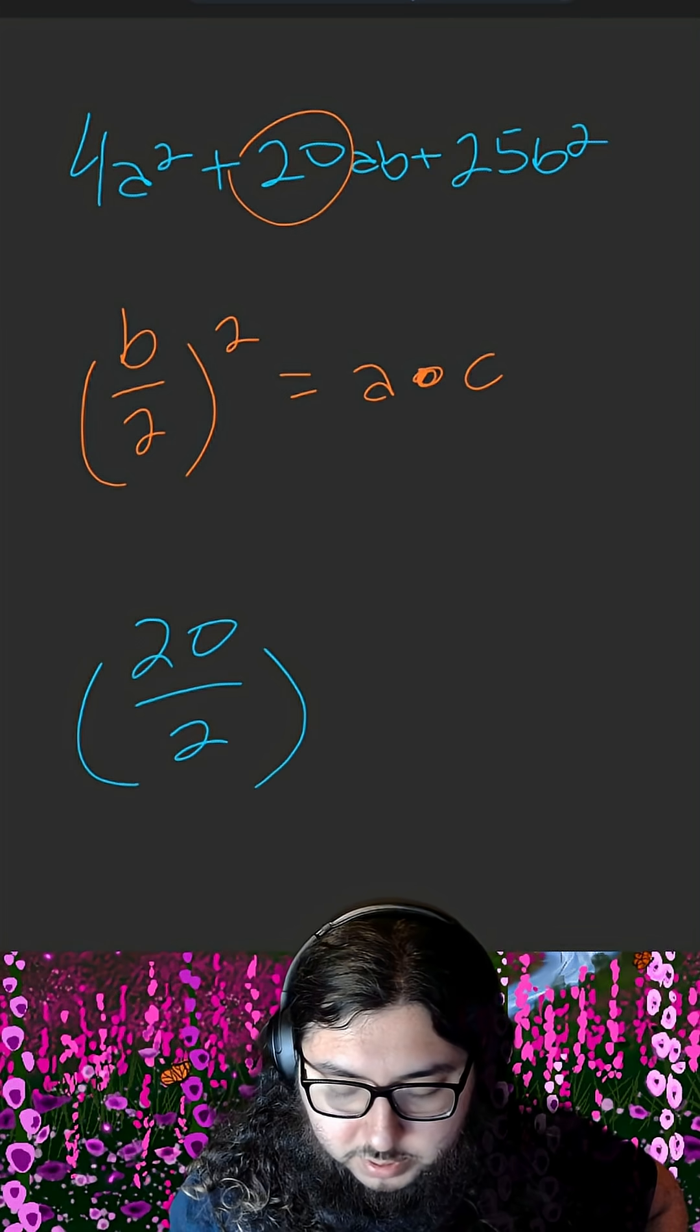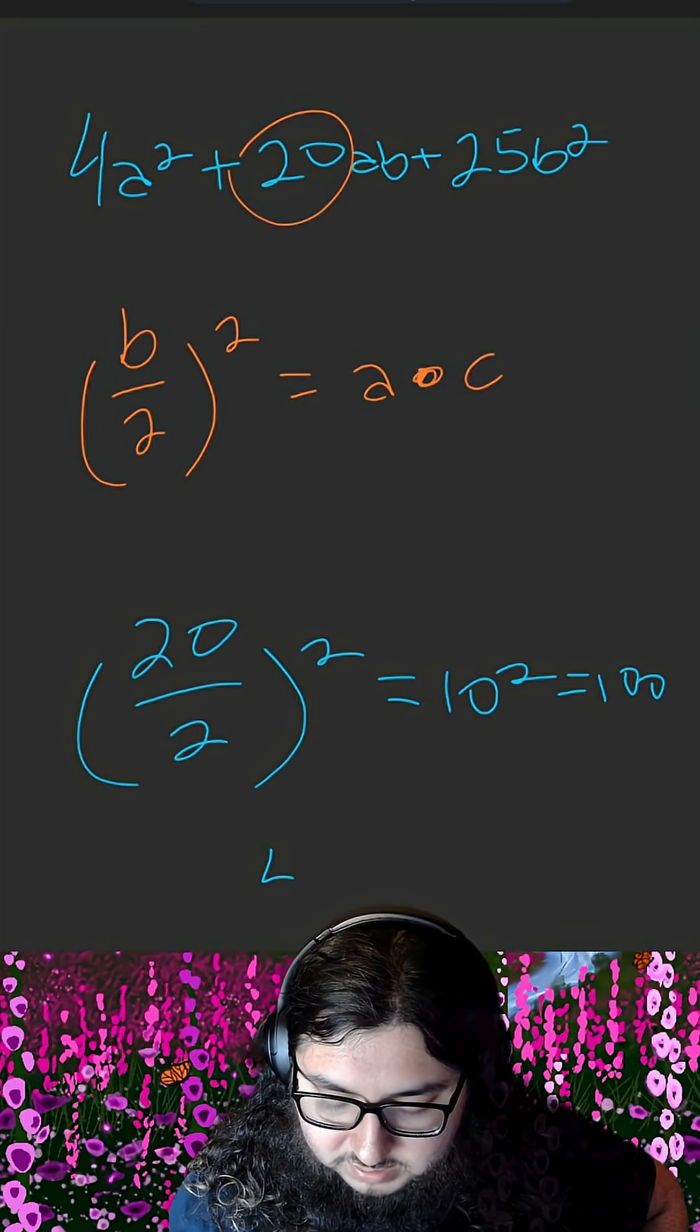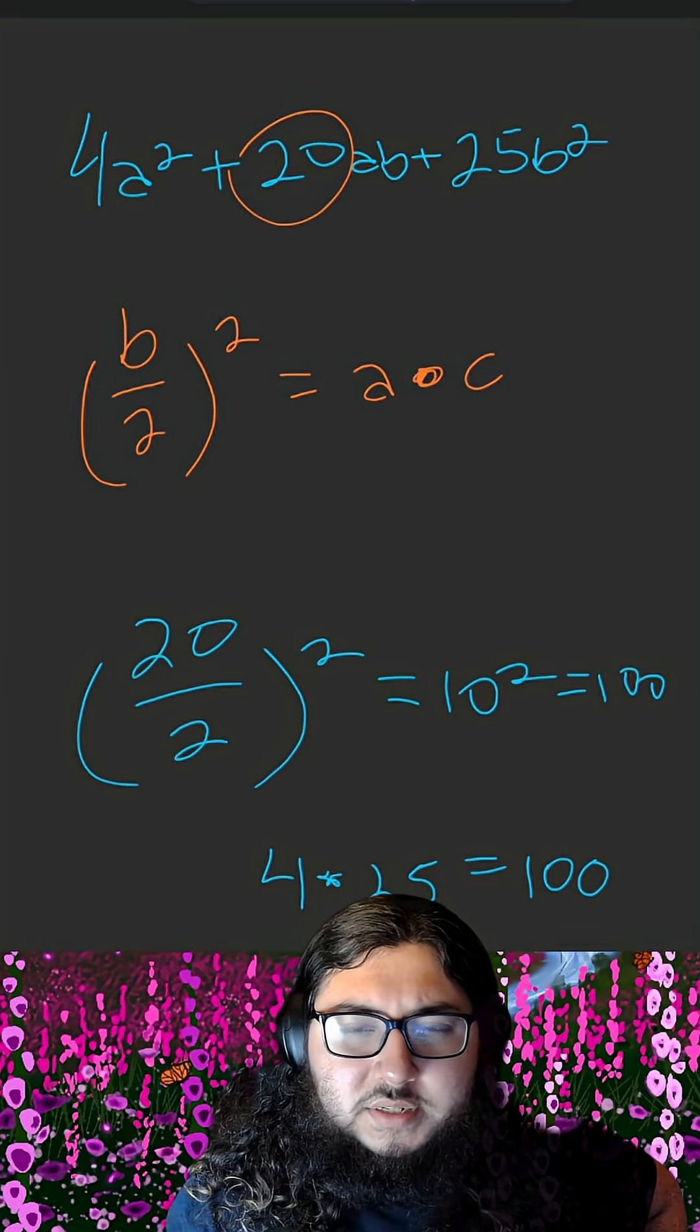20 divided by 2 squared gives us 10 squared, which is just 100. Which is in fact the same as 4 times 25, also 100.